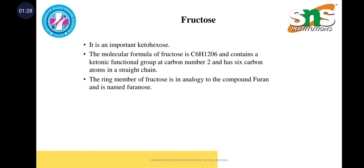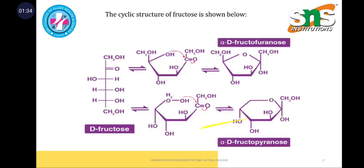The ring structure of fructose is in analogy to the compound furan and it is named as furanose. This is the cyclic structure of fructose, showing D-fructose and alpha-D-fructopyranose structure.